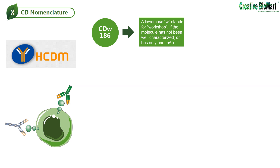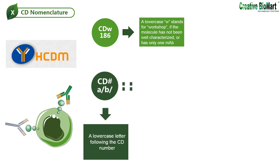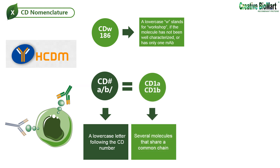A lowercase letter following the CD number — for example, CD1A, CD1B, CD1C, CD1D, or CD1E — indicates several molecules that share a common chain. Other examples are the integrin chains CD11A, CD11B, and CD11C, all of which share CD18 as a common chain to form different dimers.